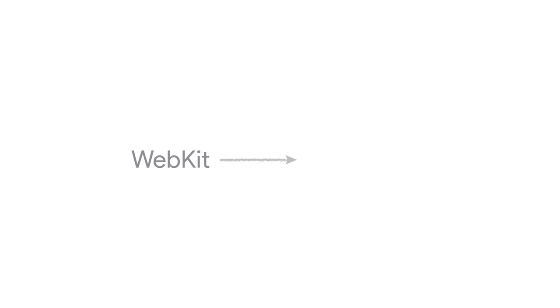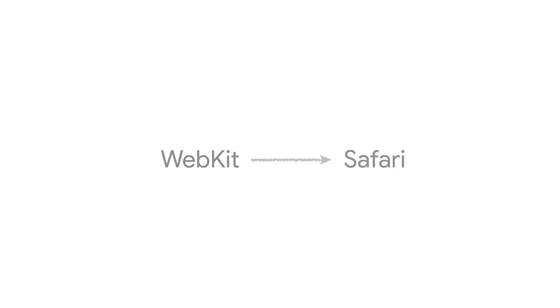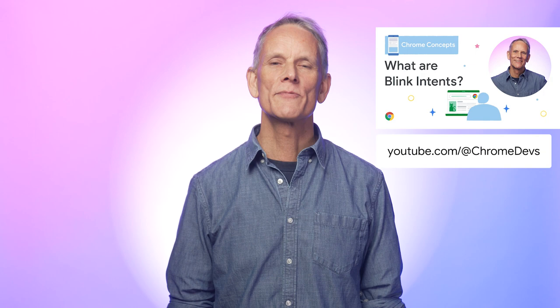Starting from version 28, Chrome engineers decided to begin work on their own rendering engine. They forked their code from WebKit and called it Blink. Rumor has it that Blink was named after the blink tag available in Netscape Navigator, used to make text blink on and off. To sum up: Chrome, Microsoft Edge, Opera, Vivaldi, Brave, and other Chromium-based browsers use Blink. Safari and some other browsers use WebKit, including all browsers on iOS. Firefox uses a rendering engine called Gecko. That's the basics of Blink — to find out more, take a look at our article, and check out our video 'What are Blink Intents', which describes how new features make their way into Blink.